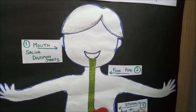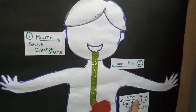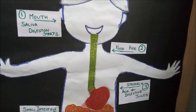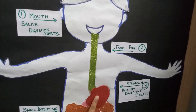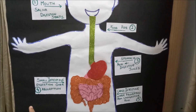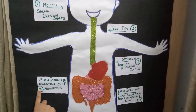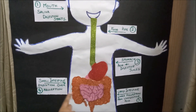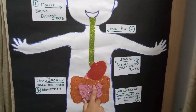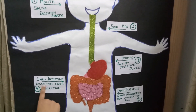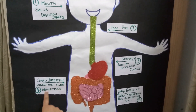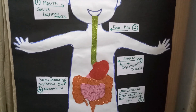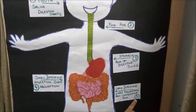Third, Stomach — Acid and Digestive Juices. Fourth, Small Intestine — Digestion and Absorption.